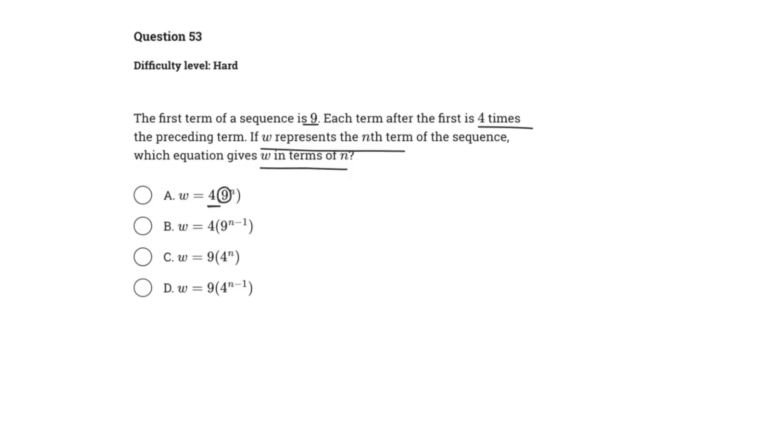So because we know that the first term is 9, that is the starting value. We know that every term after that is 4 times the preceding term, and therefore the scale factor of 4 is being applied onto each consecutive value.